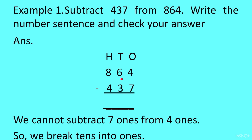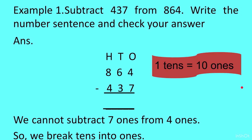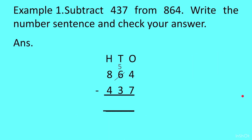We will break up the 6. When we take out 1 ten, we cancel the 6 and write 5. The 1 ten that comes out goes to the ones column and becomes 10 ones. 10 ones plus 4 ones gives us 14, so we cut the 4 and write 14 on top. 14 minus 7 gives us 7.